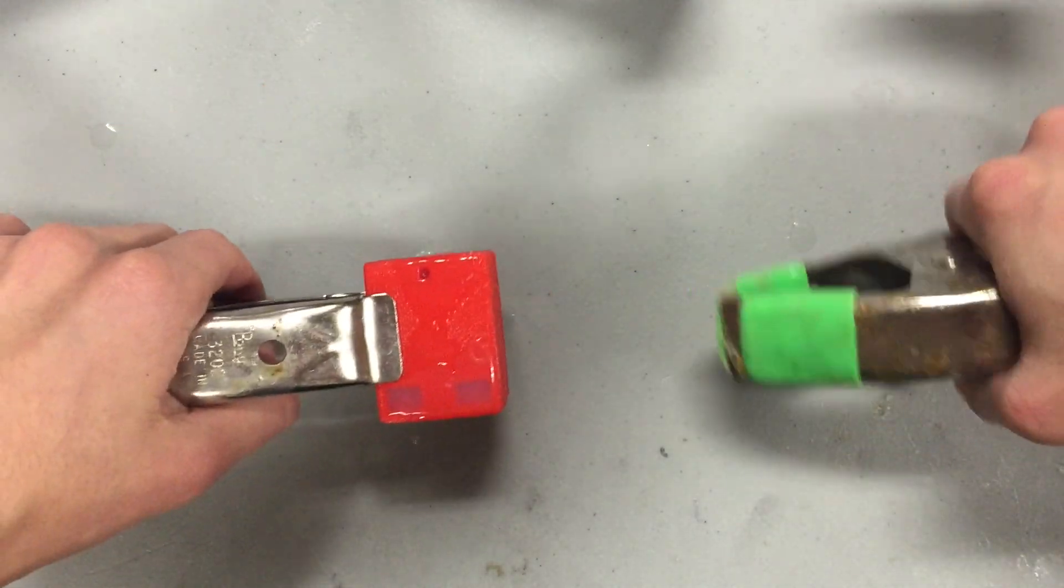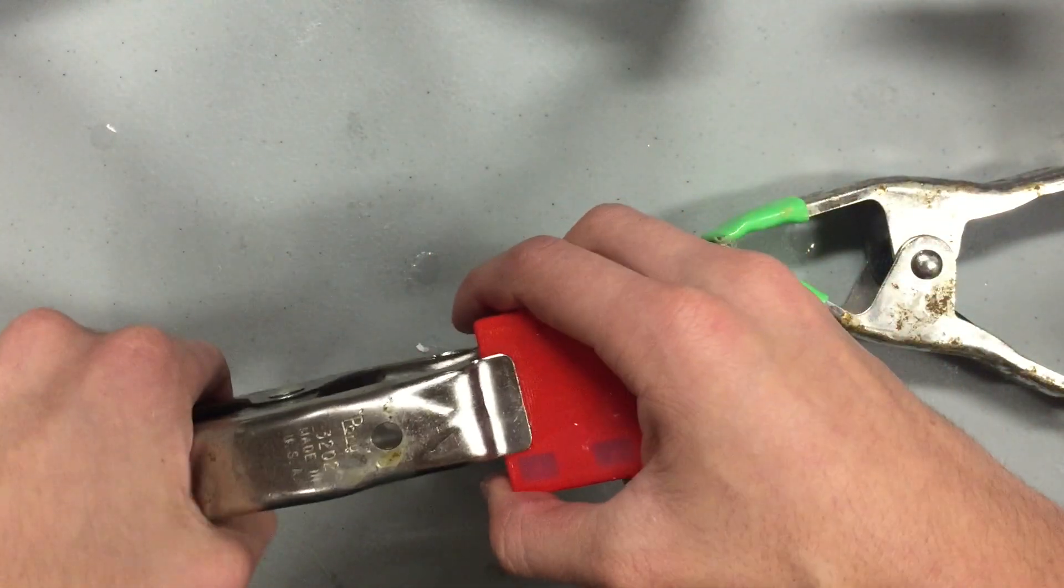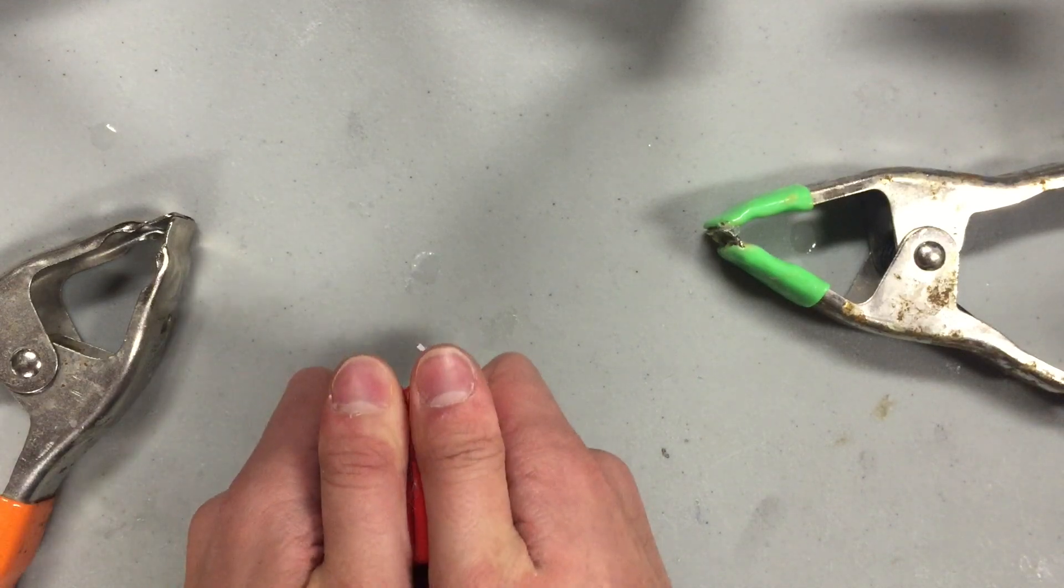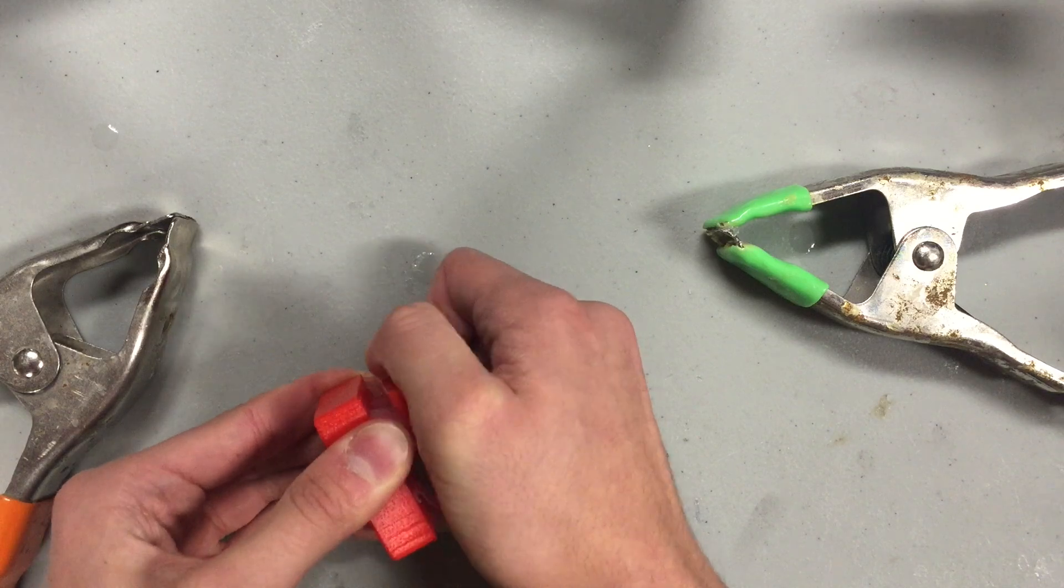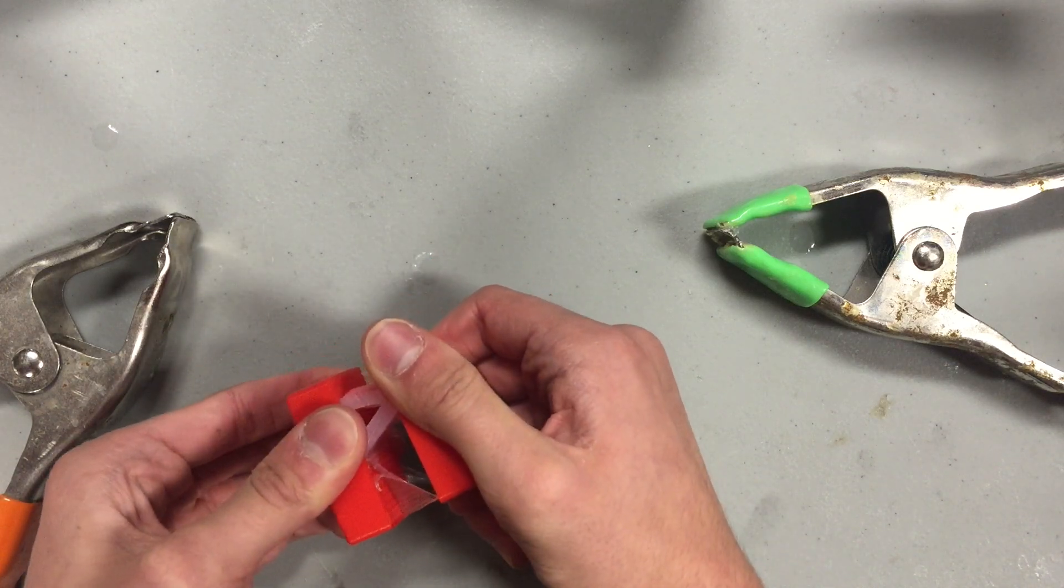Alright, once it's all cured, you can take off the clamps. Use the tips of the tweezers to pry open the mold until you can pull it open with your hands. You'll want to push the cast out of the top mold first and then the rest out of the bottom.